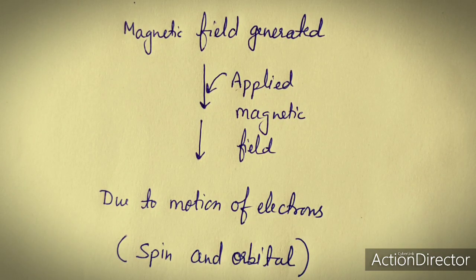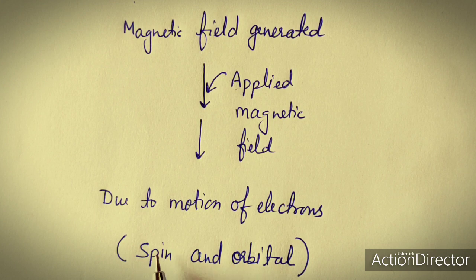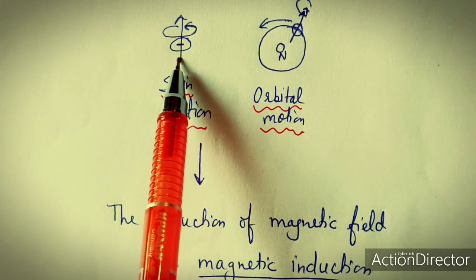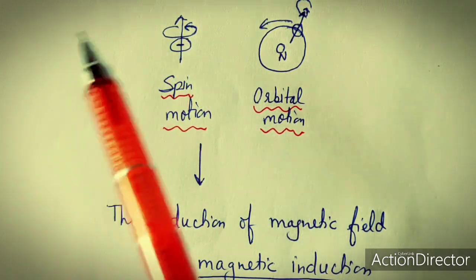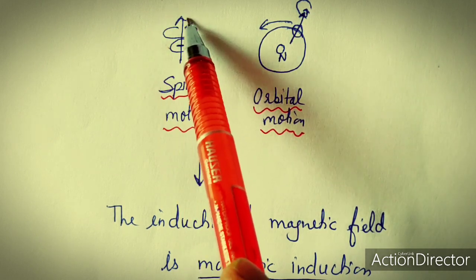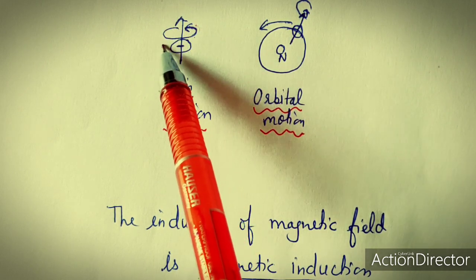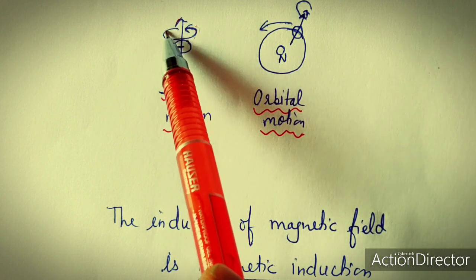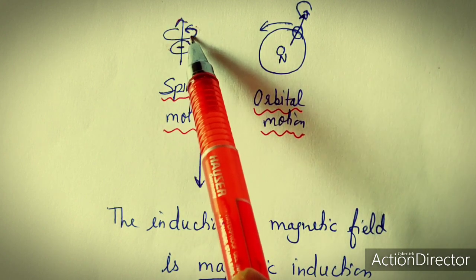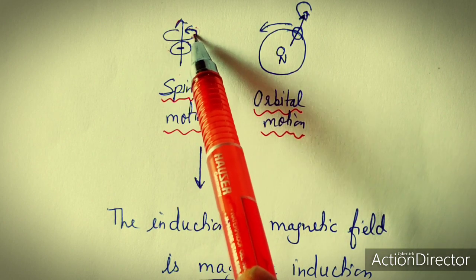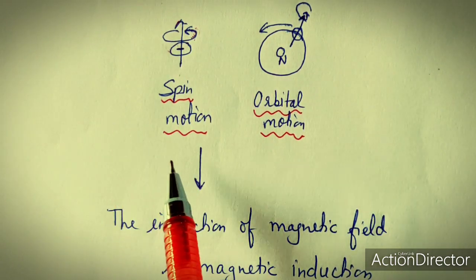The motion of the electrons may be of two types: spin or orbital. Spin motion is the motion of the electron along its axis. This electron can rotate clockwise or anti-clockwise, so it may have spin +1/2 or spin -1/2. It's the spin motion around its axis.